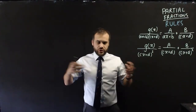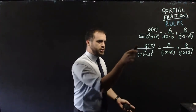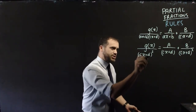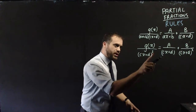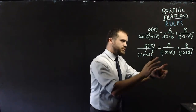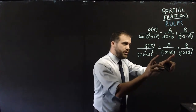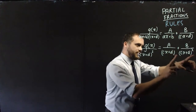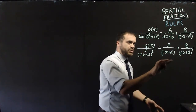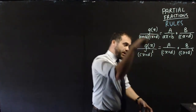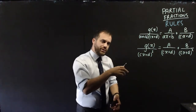New day, new formula. If g(x) equals (cx + d)², a linear function on the bottom squared, that's going to result in a over that linear factor plus b over that linear factor squared. Let's do a worked example that combines these two rules together.